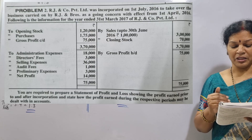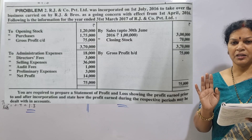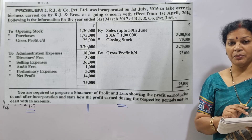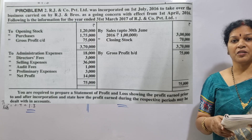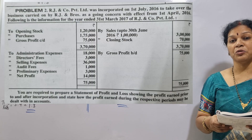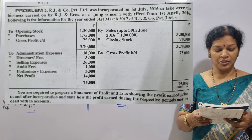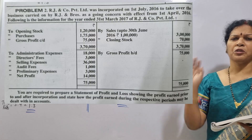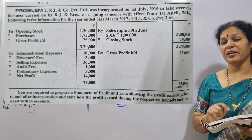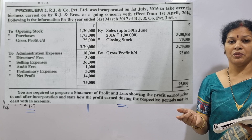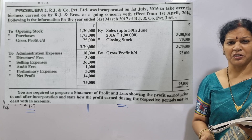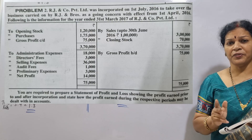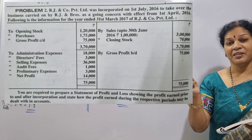We need to find the sales ratio. Gross profit is not required on its own — in the profit and loss account on the credit side, we use gross profit. All expenses are required to be distributed. Administrative expenses are on time basis. Director fee is company-related and required.